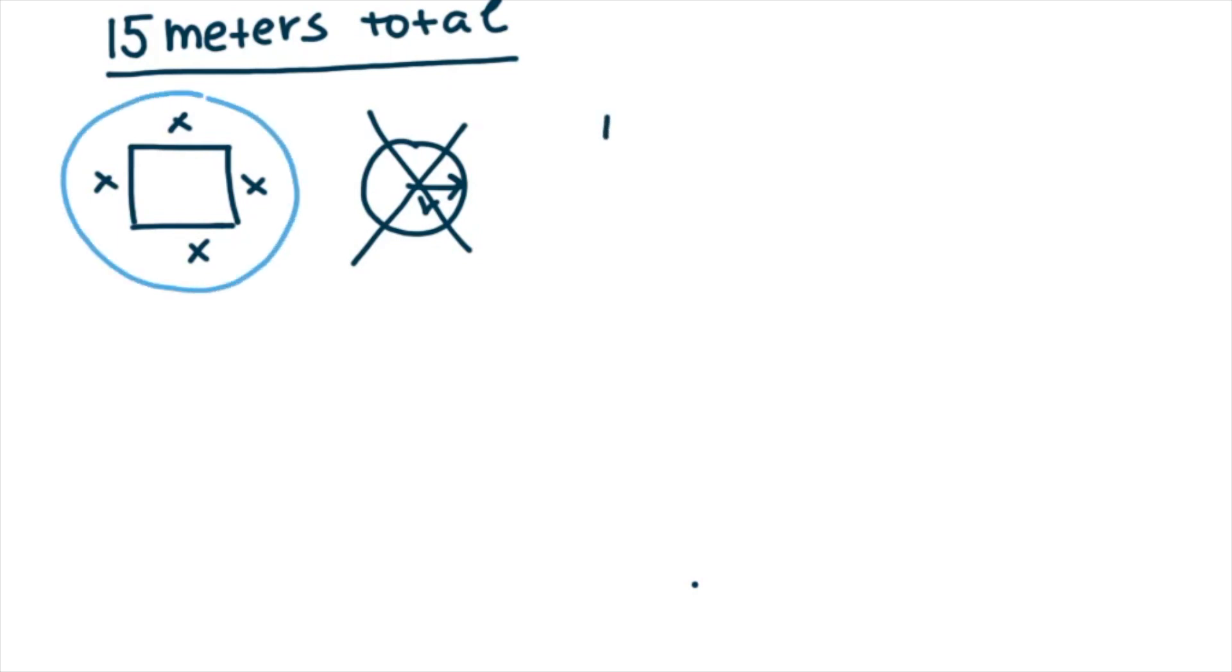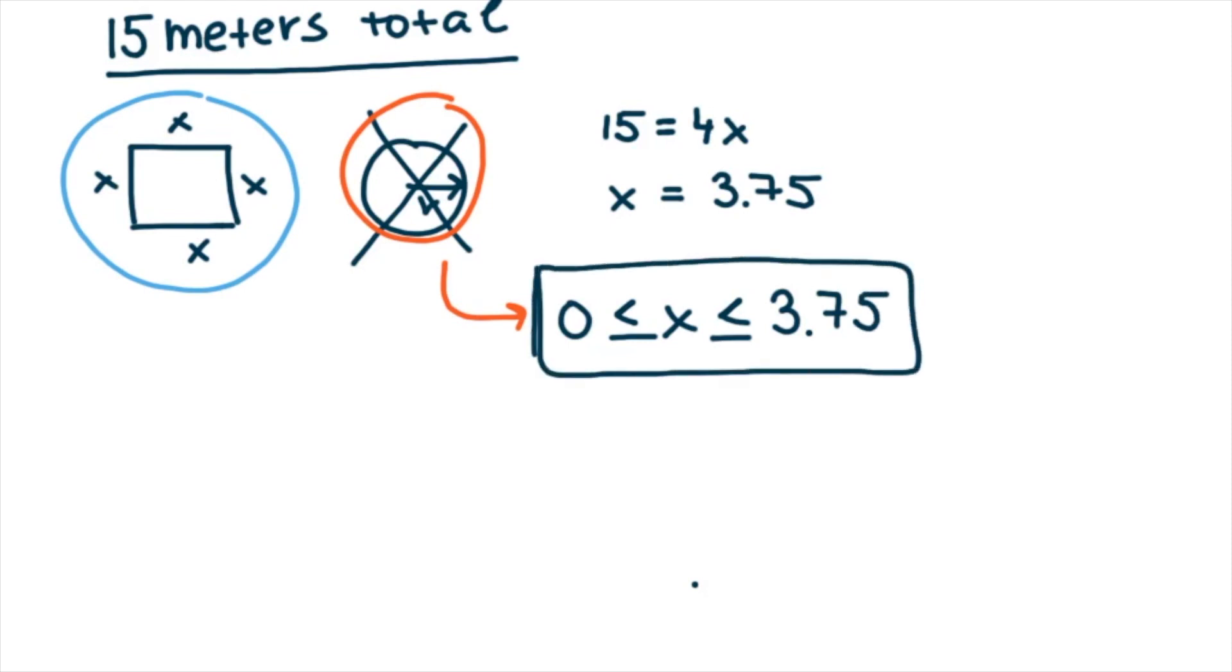Now we need to figure out our range. We have 15 meters of mesh in total, and we could use only the square or only the circle, but we are going to use both, obviously, because we have 2 animals. So we will solve the range from the circumference of the square. And we solve for x, which is 3.75, which would be the maximum x for our problem. So this is our range from 0 to 3.75.